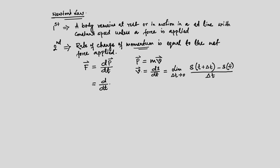In place of momentum we substitute the expression, and since mass is constant, what we have is mass times the rate of change of velocity. The rate of change of velocity is called acceleration, so this is nothing but mass times acceleration. Therefore, the force we apply is effectively mass times acceleration — that is what we get from Newton's second law.